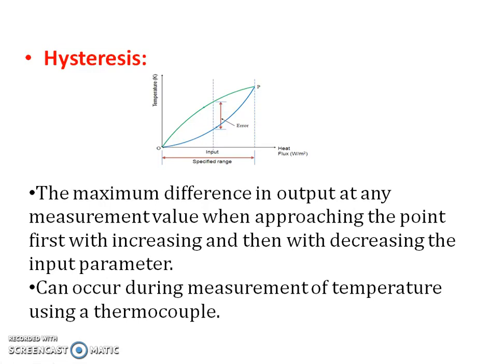Next, hysteresis. The maximum difference in output at any measurement value when approaching the point first with increasing and then with decreasing the input parameter is called hysteresis. It can occur during measurement of temperature using a thermocouple.